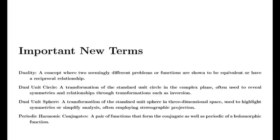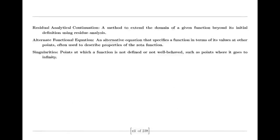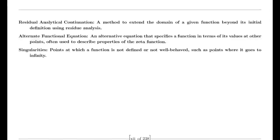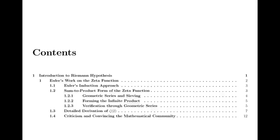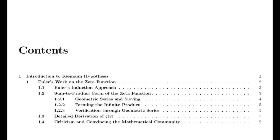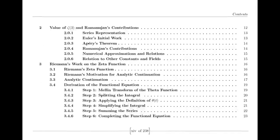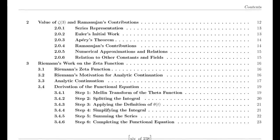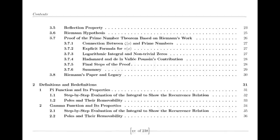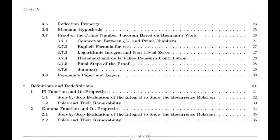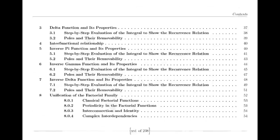Moving to the 19th century, we encounter Bernhard Riemann, who expanded our understanding of complex functions. Riemann introduced the concept of analytic continuation, allowing the extension of functions beyond their initial domains. He extended the Riemann zeta function — initially defined only for complex numbers with real parts greater than 1 — to the entire complex plane except for s equals 1, where it has a simple pole. This was a crucial advancement in complex analysis.